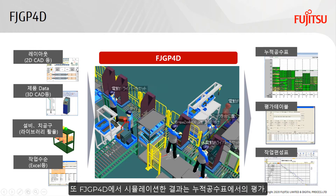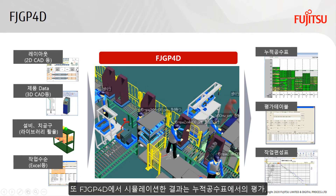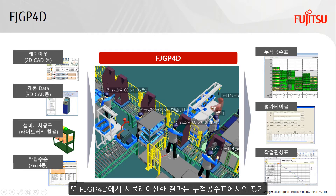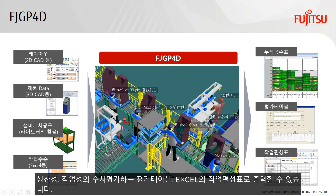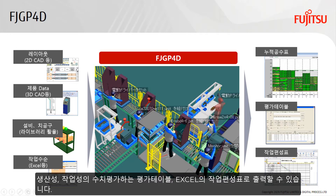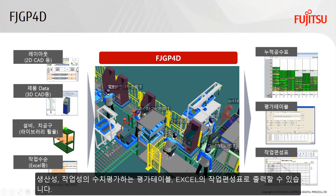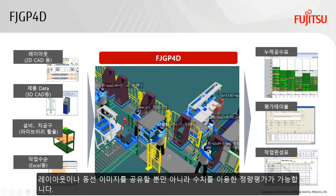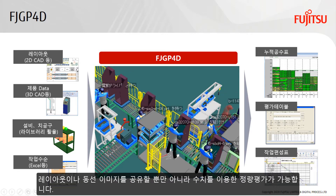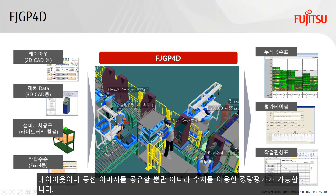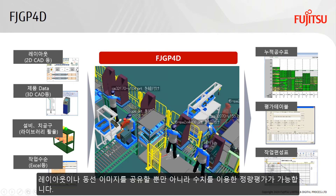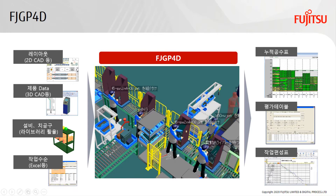The results of the simulation with FJGP4D can be output to the process balance chart, the evaluation table that evaluates productivity and workability numerically, and the work combination table of Excel. Not only can you share the layout of the production line and the image of the walking path of the worker, but you can also perform quantitative evaluation using numerical values.